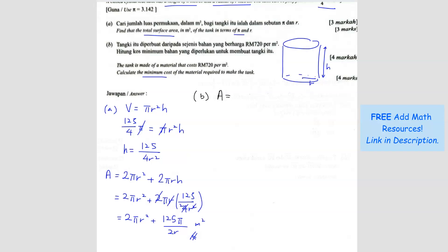First step is to find the minimum area. We're going to use the question A answer. A equals 2 pi r squared plus 125 pi over 2. I'm going to bring the r up here, so it's r to the negative 1. We want to find dA/dr. When you want to find the minimum point, dA/dr equals 0.